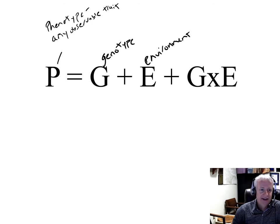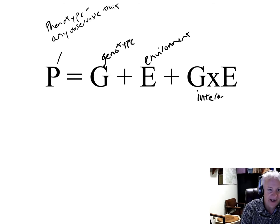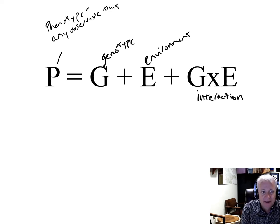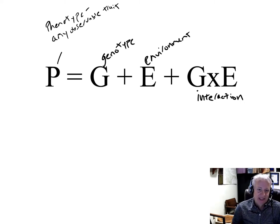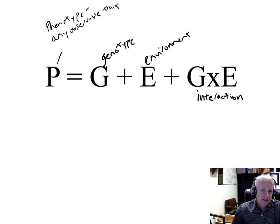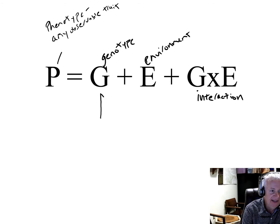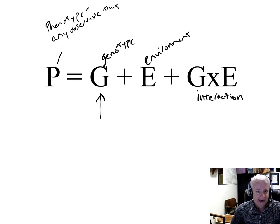In addition, there's an interaction term — the interaction of genotype by environment, or G by E. That interaction means that in some cases, the expression of a particular gene or set of genes in the phenotype depends on the environment that the plant is in. So that's essentially a combination of control between genes and environment. The central challenge of tree breeding is understanding to what degree the genotype term controls the observed phenotype for the traits we're interested in.